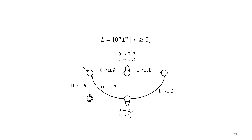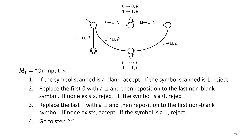Let's look at this diagram we've looked at a couple of times already. This is for the language 0^n 1^n. It's simple — it has five states. The way it works is it crosses off the first zero and then crosses off a one, going back and forth making sure it crosses one-for-one, keeping track of the two blocks being the same size.